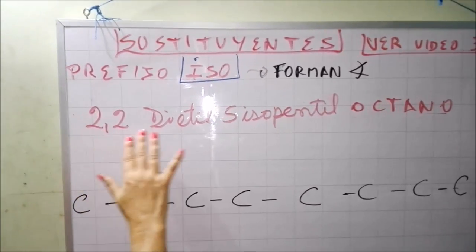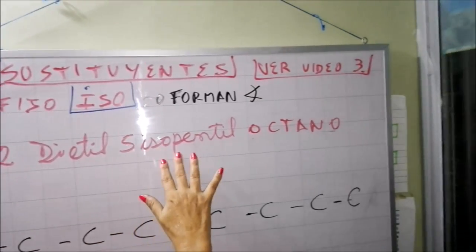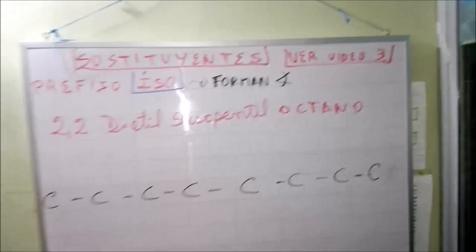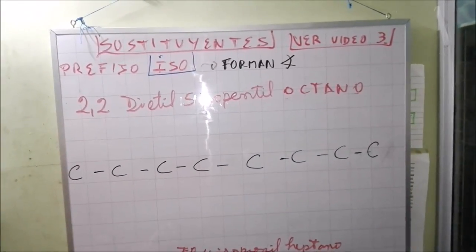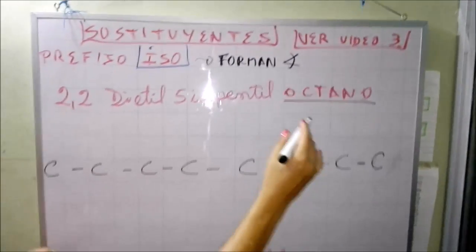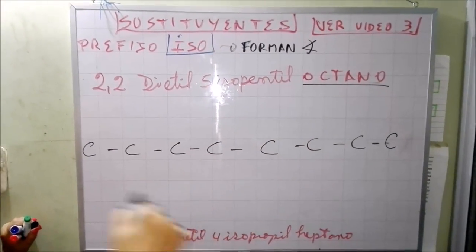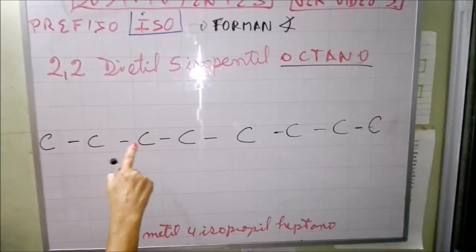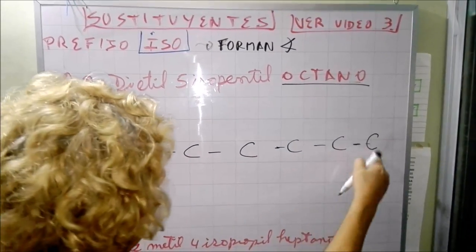Vamos a hacer dos ejercicios para que te quede bien clarito. Voy a tener lo siguiente: tengo puesto 2,2-dietil-5-isopentil-octano. Siempre cuando tengas así un ejercicio, date cuenta que la última palabra que te nombra es la cadena principal. Como me dice octano, significa que son 8 carbonos: 1, 2, 3, 4, 5, 6, 7, 8.